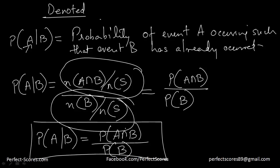One more thing to take care of: make sure that the probability of event B occurring is not equal to 0, because if it is, the probability would be infinite, which is a problem. Also, B should not be an empty set, because then P(A∩B) would just equal P(A) and there would be no need for this formula.